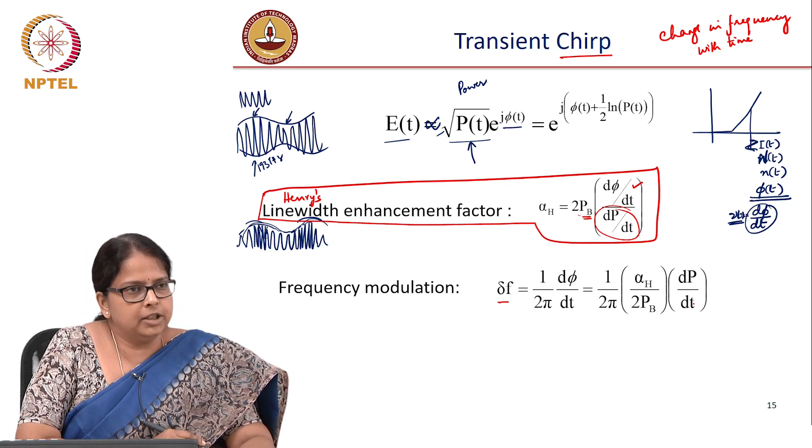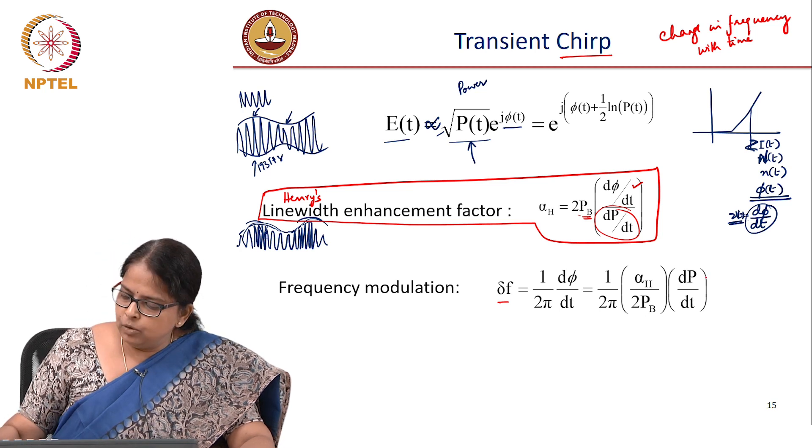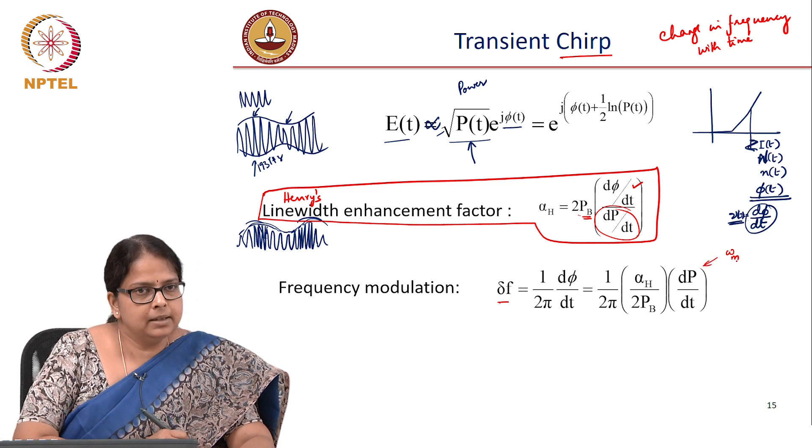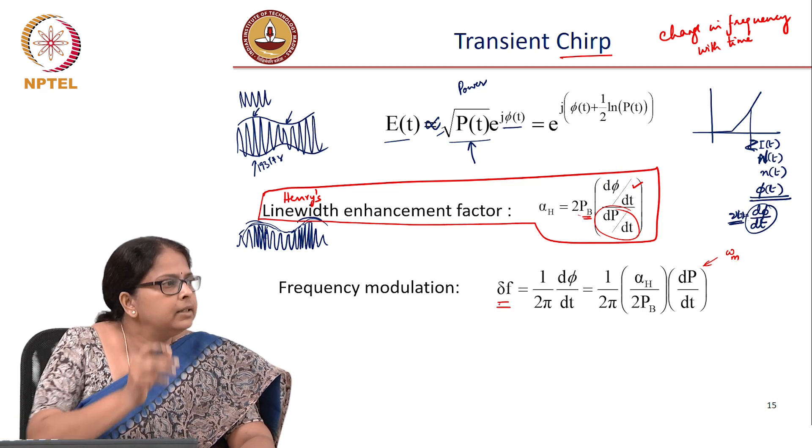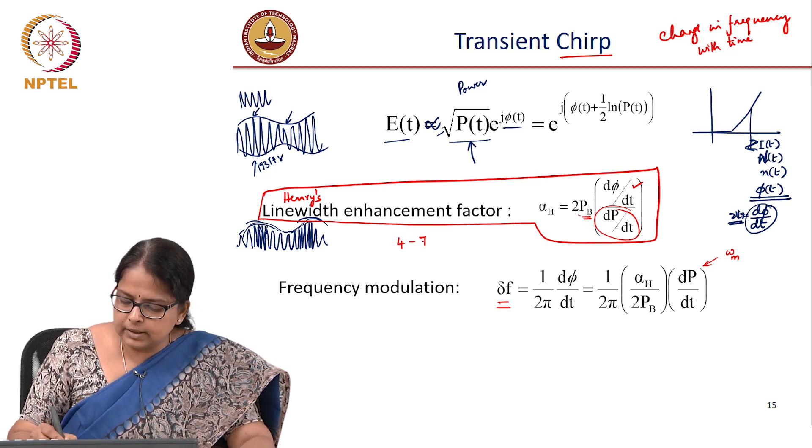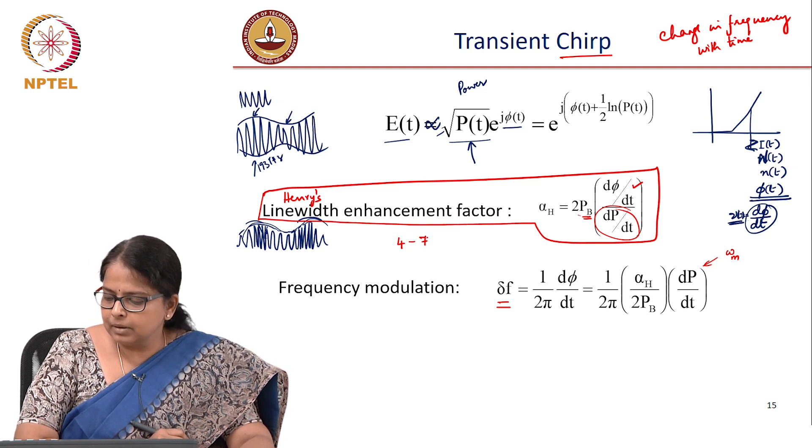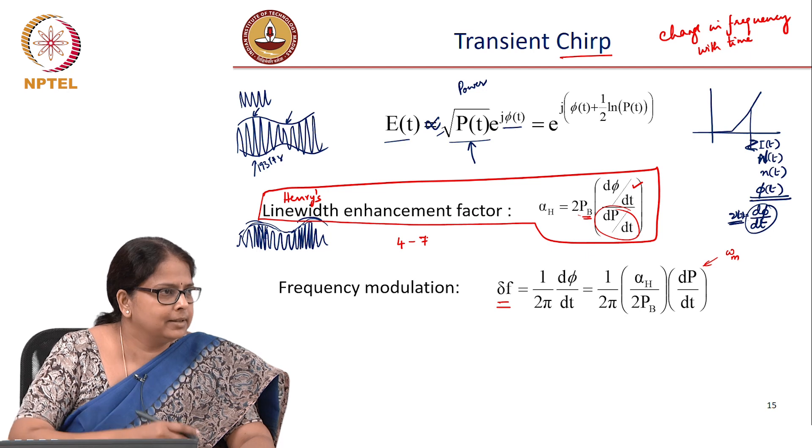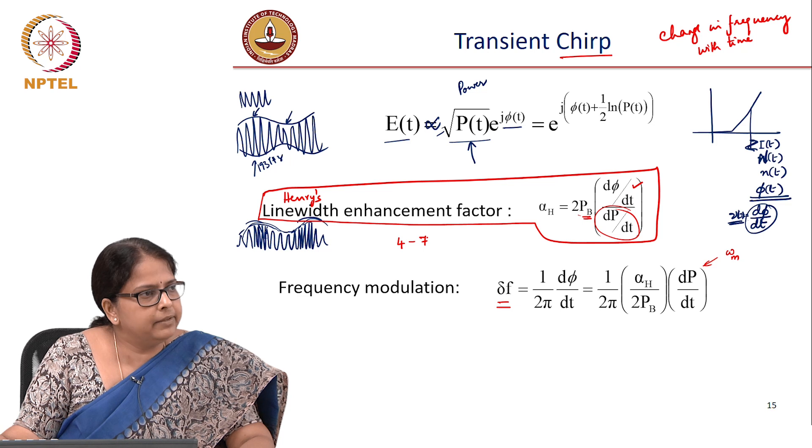If I have a certain current modulation or a certain power modulation and if I know that it is a sinusoid for instance of omega modulating frequency, if this is happening at omega modulating frequency, I exactly know how much is the frequency spread. And this number is typically 4 to 7. This number is, it is a dimensionless number, 4 to 7 typically for lasers. So you can a priori estimate what is a frequency modulation when I have a certain.